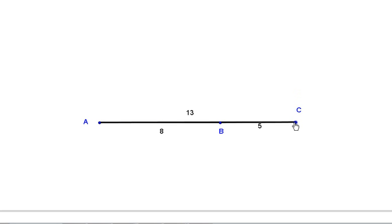And it also can't be 13. Otherwise, we get a straight line. So AC has to be greater than 3 and less than 13.